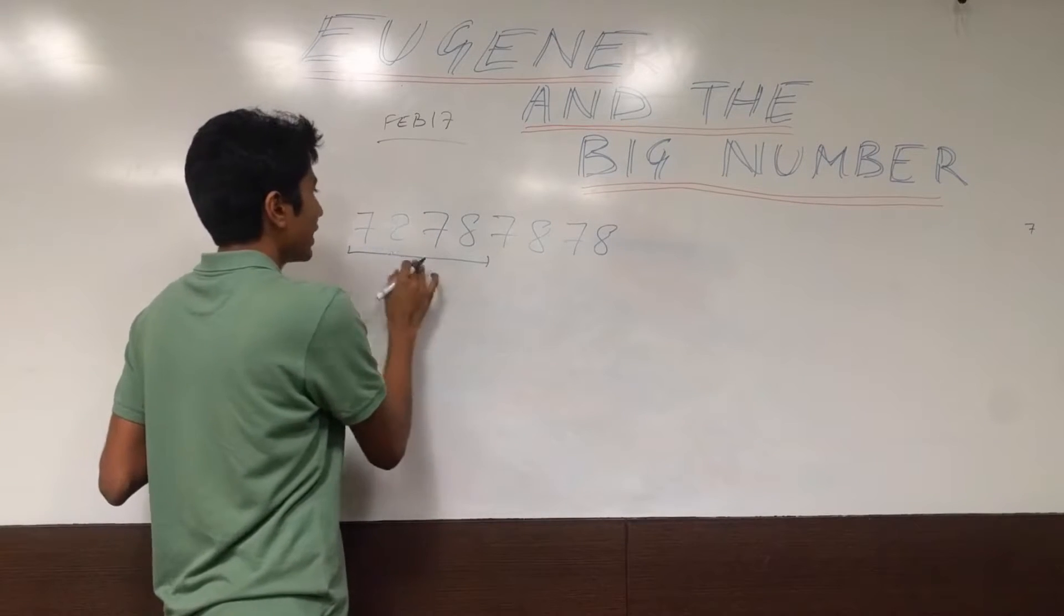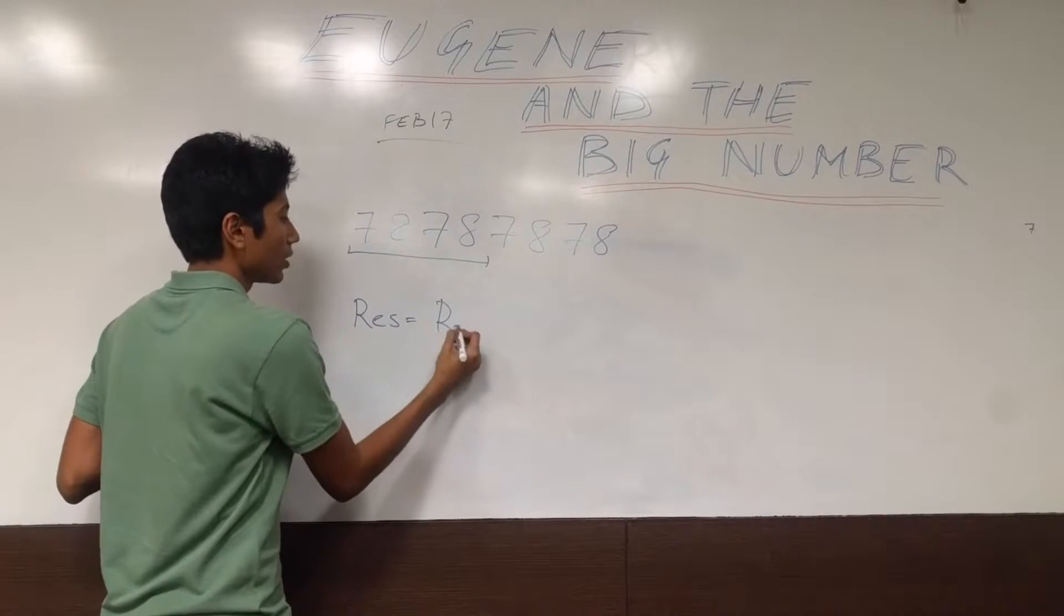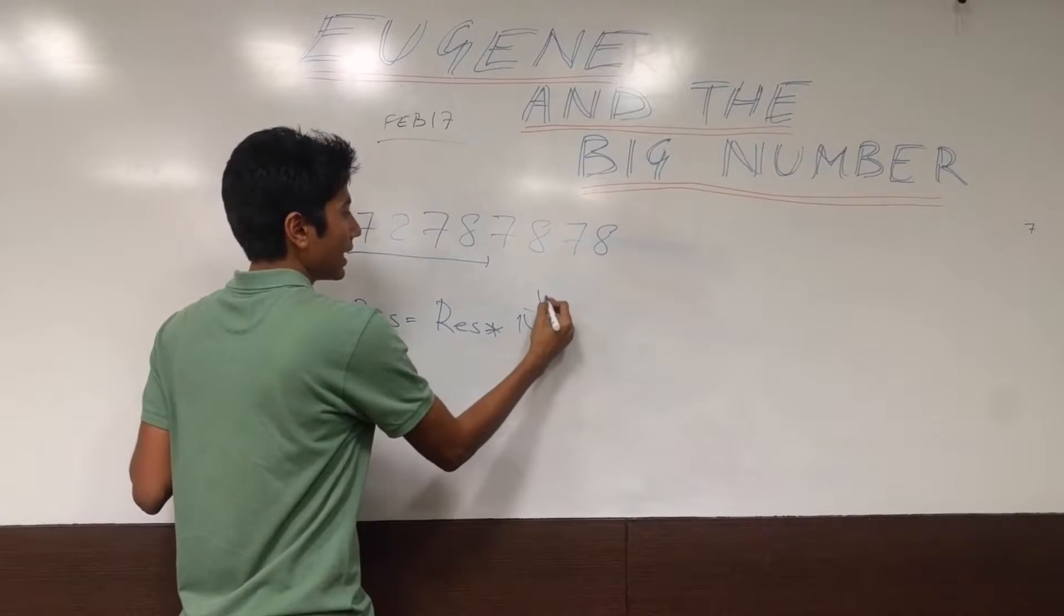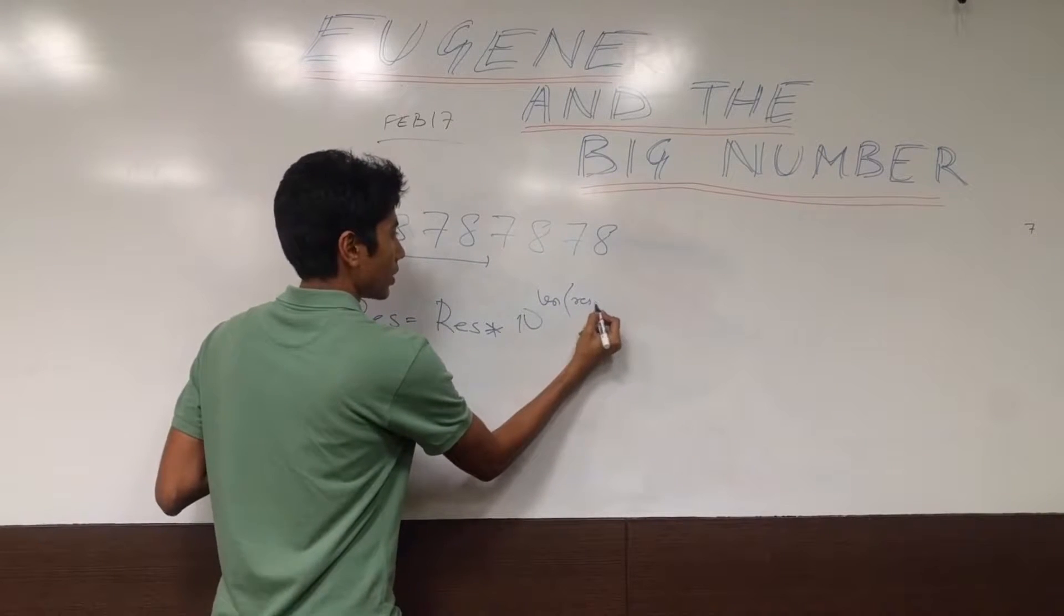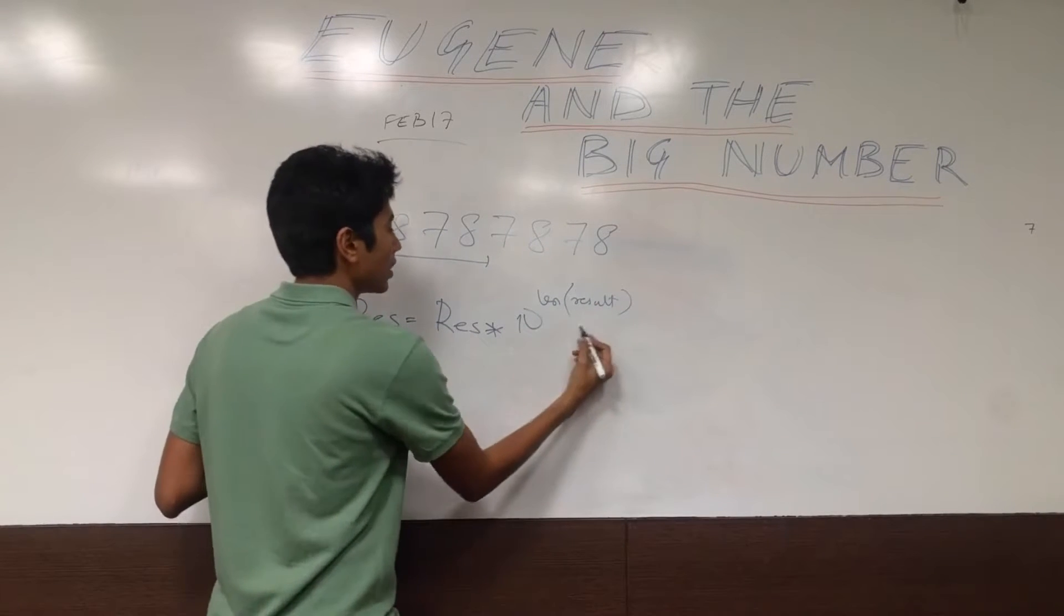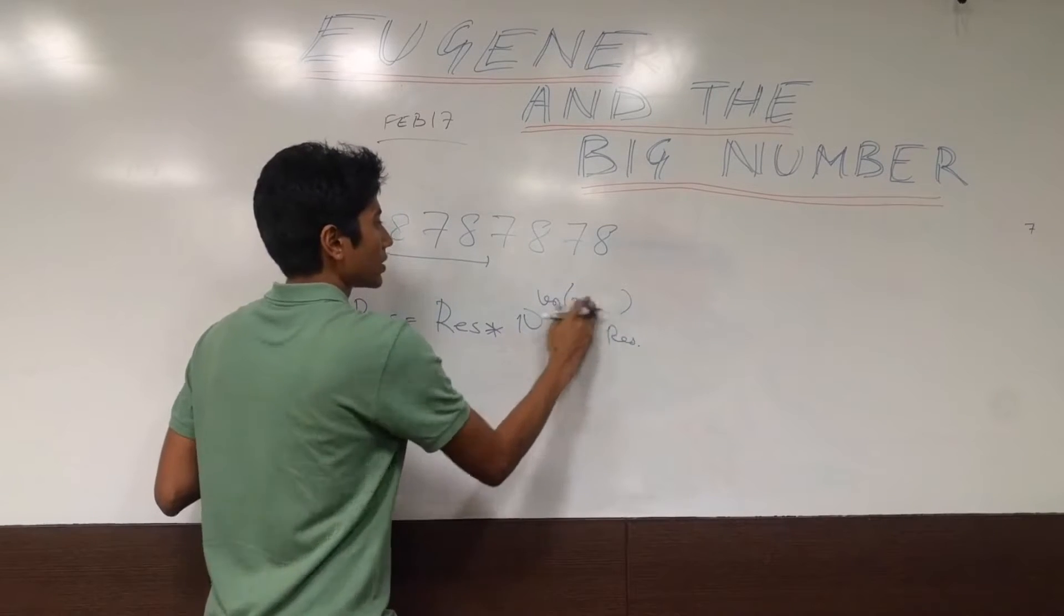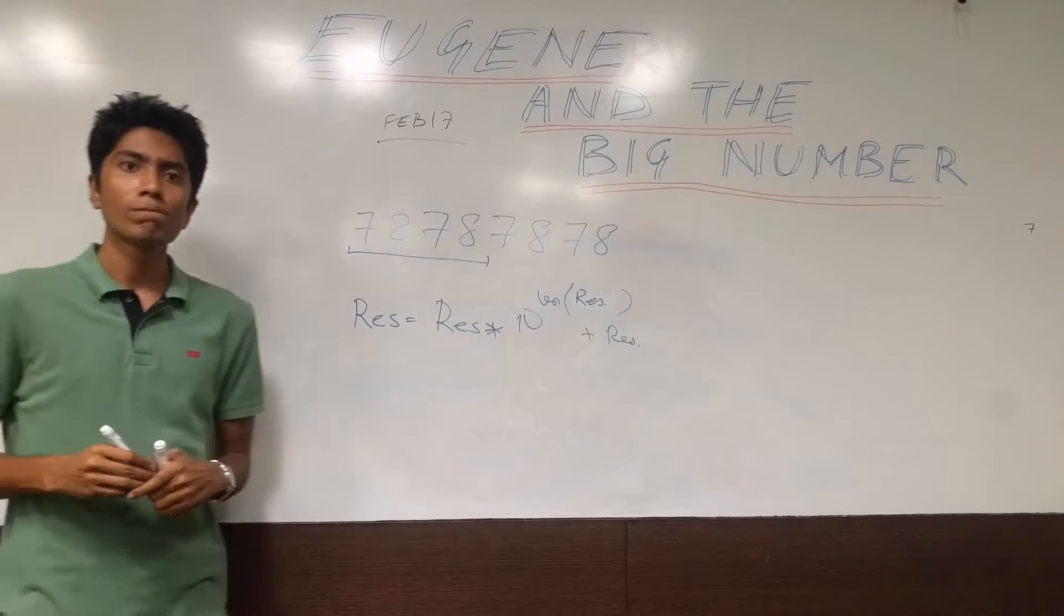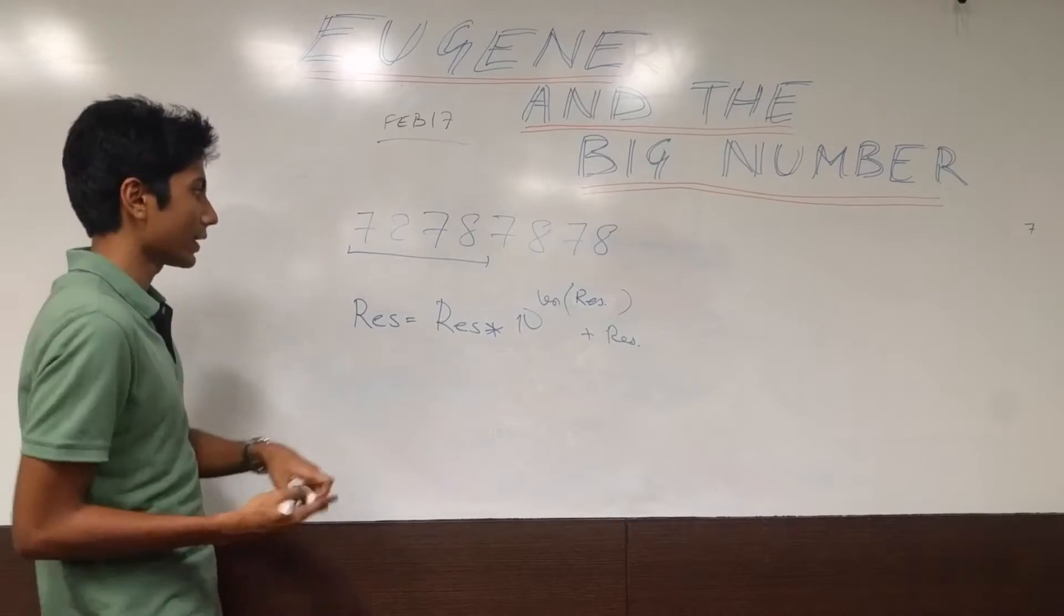So 78, 78 was something that you had. Then your new result would be the old result into 10 raised to the power the length of the old result, which is for now in the equation still result, plus result. And for consistency I will just write it res. So how fast are we going now? Pretty fast. We are going at an exponential rate.